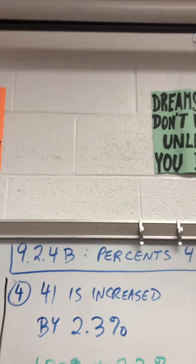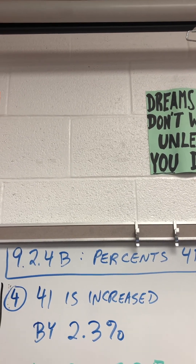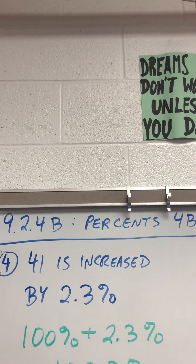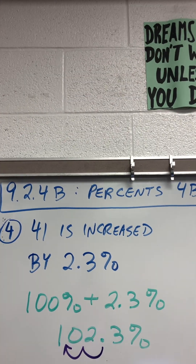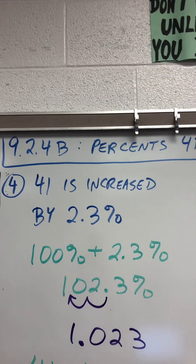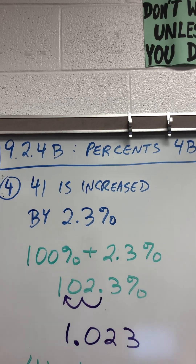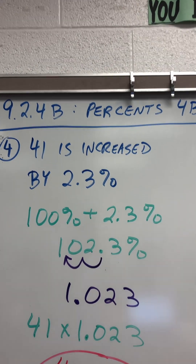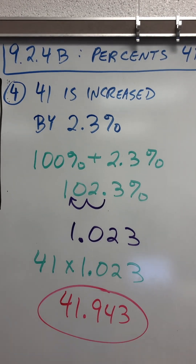41 is increased by 2.3%. So do 100% plus 2.3%. That will give you 102.3%. Move the decimal two places, 1.023. Do 41 times 1.023. It gives you 41.943.